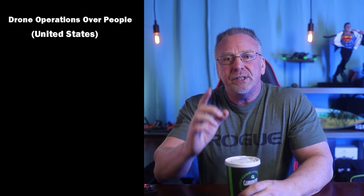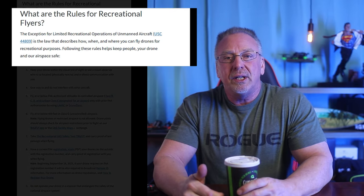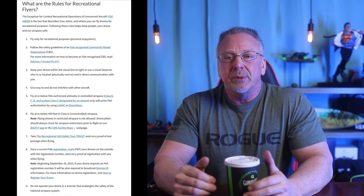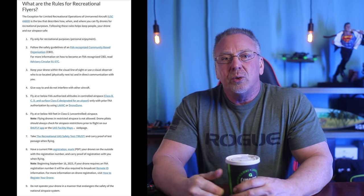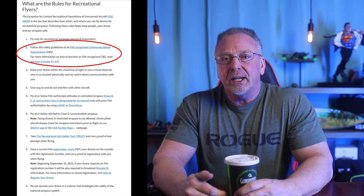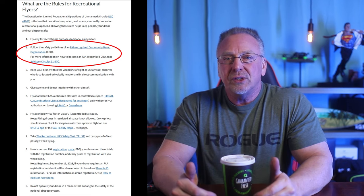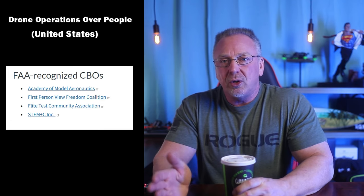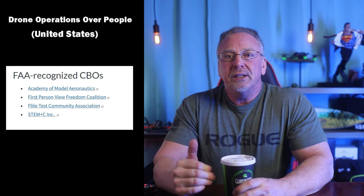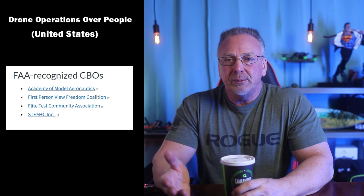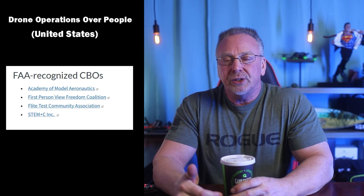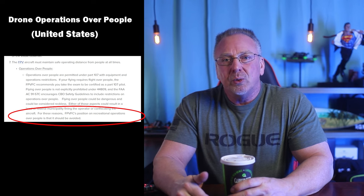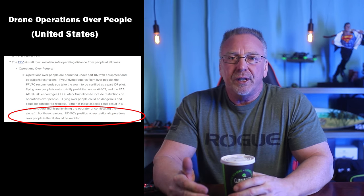The first thing you want to know: if you're a recreational flyer as outlined under Section 44809, there are about nine rules under that section. One of those rules is to follow the safety guidelines of an FAA-recognized community-based organization, or CBO. As of this video upload, there are four CBOs listed on the website. The FPV Freedom Coalition CBO states in general terms that flying over people should be avoided.